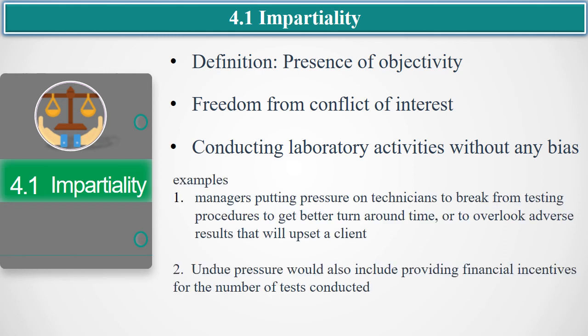A few examples of impartiality violations are: first, managers putting pressure on technicians to deviate from testing procedures to get better turnaround time, or to overlook adverse results that will upset a client. Second, undue pressure would also include providing financial incentives for the number of tests conducted.